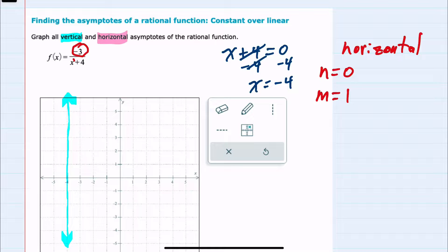If the degree of the top is less than the degree of the bottom, we would have an asymptote at y equals 0.